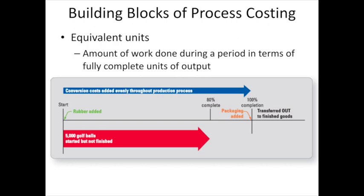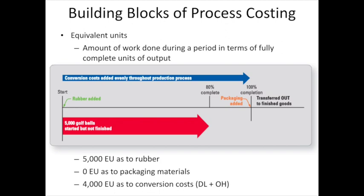However, packaging is not added until the very end of the process. If we're only 80% through the process, then none of the packaging has been added — therefore we have zero equivalent units as to packaging materials. We also need to compute equivalent units for conversion costs. Since conversion costs are added evenly throughout, and we have 5,000 golf balls that were started but not yet finished at 80% complete, we have an equivalent of 4,000 units completed as to the costs that have been added.